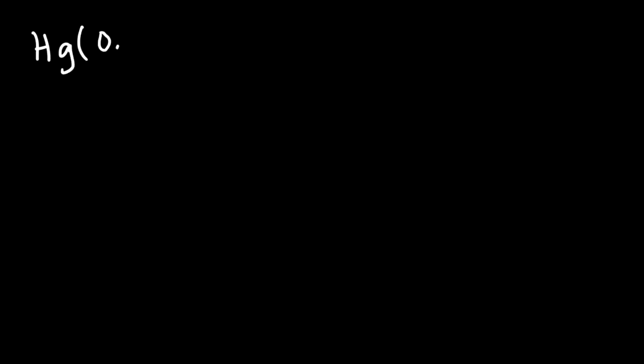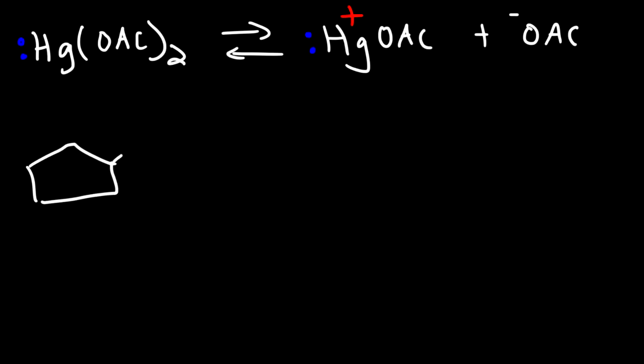So the first thing we need to talk about is mercury acetate, specifically mercury 2 acetate, which you can call mercuric acetate. So this can ionize in solution, releasing an acetate ion. Now, the mercury atom has a lone pair. And once it gives up an acetate ion, it's going to have a positive charge. And so the alkene has a strong desire to interact with this electrophile, because the alkene is a nucleophile. And so it's going to attack this particular ion.